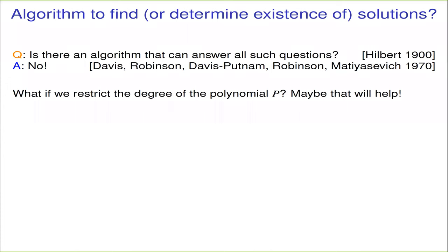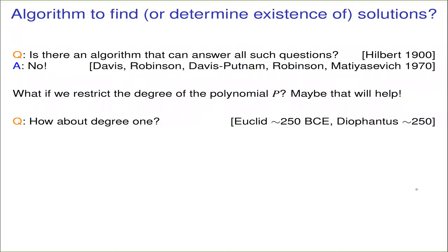Both systems of Diophantine equations — what if we restricted to just a single polynomial of bounded degree? Maybe that's an easier problem, and indeed it is. Certainly if we consider only degree one polynomials — linear Diophantine equations — these we do know how to solve. Euclid and Diophantus both wrote extensively on this problem, and by the seventh century we had a complete method, an algorithm, for determining all solutions to linear Diophantine equations.